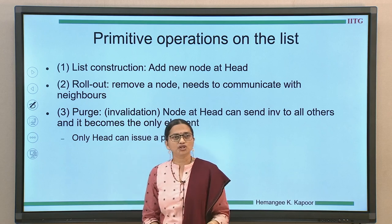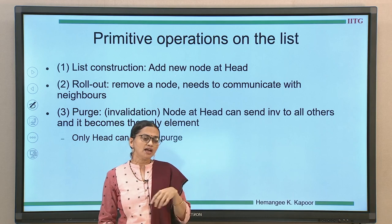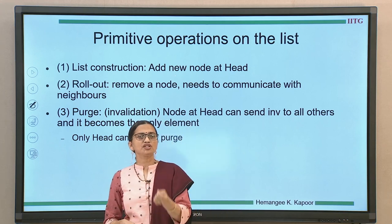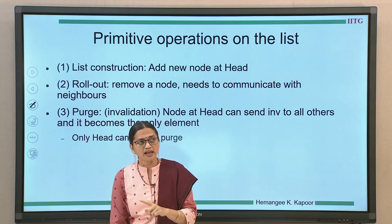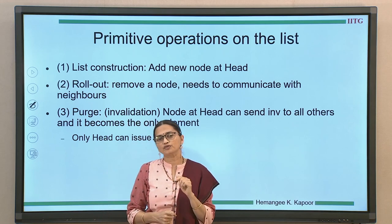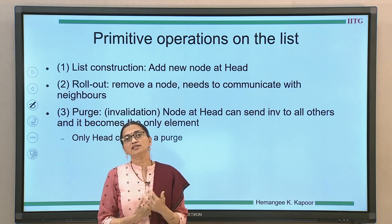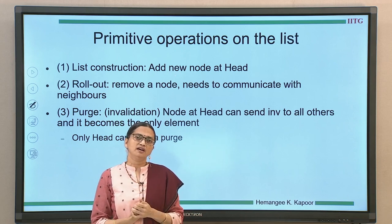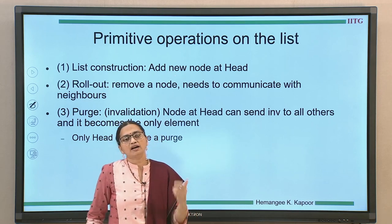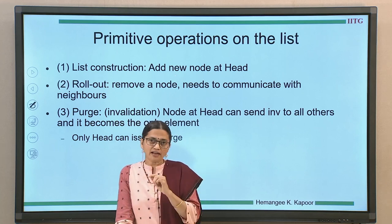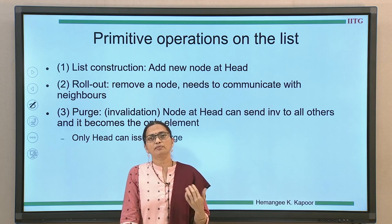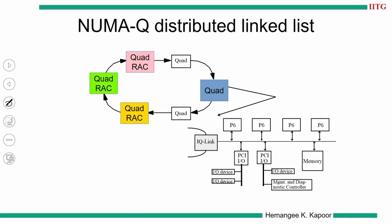The second operation is called rollout, where a node comes out of the linked list. When you delete a node from a linked list, the previous node in the list should connect to the next node. A node that is deleting itself has to communicate with the left and right neighbors, make them connect to each other, and only then can it come out of the linked list. The third operation is purging — deleting the complete list. When a node wants to do a write to a data block, it is the only writer in the system, so all sharers must be deleted. The head node uses the purge operation to delete all other nodes.